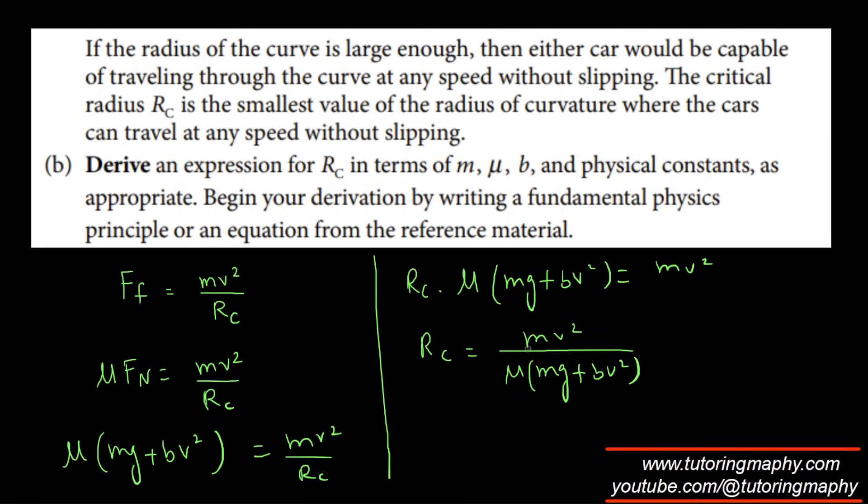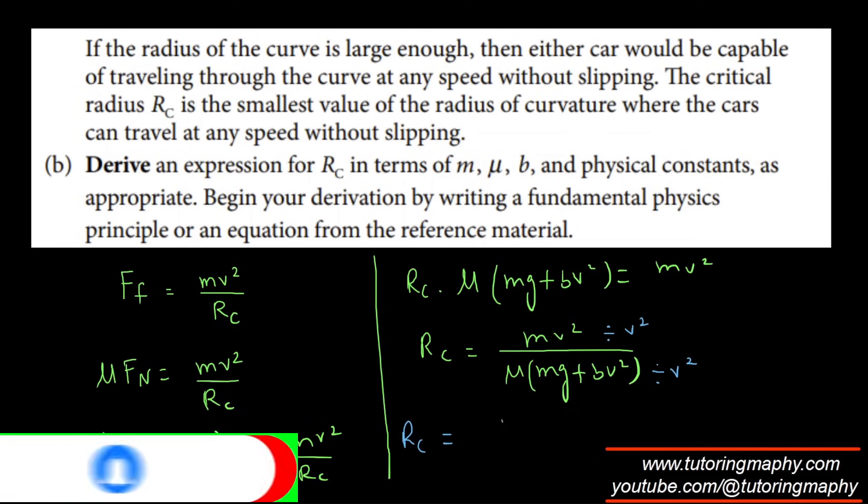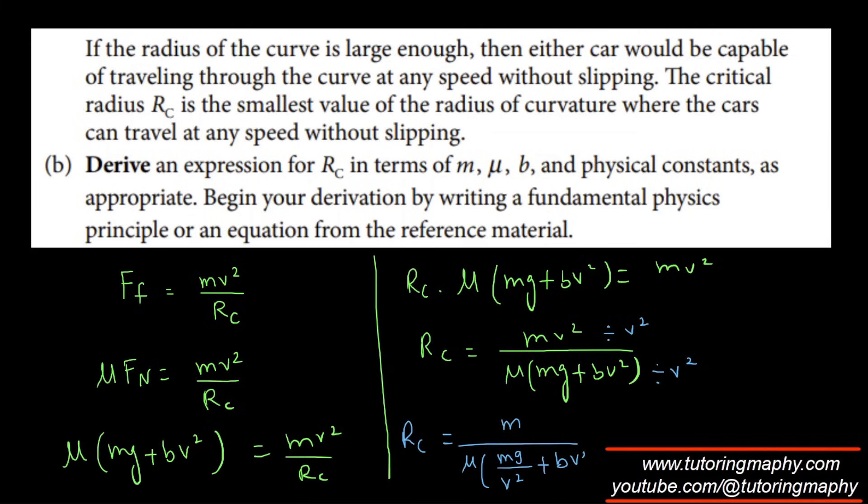So that's what I was talking about. You can get this much, but then you will wonder that they don't need V. They just need in terms of μ and B. So the catch over here is I'm going to rearrange. I'm going to manipulate this equation as R_C is equal, I'm going to divide both sides with V^2. So it's going to look like, I'm dividing this by V^2 and I'm dividing this with V^2. So MV^2 divided by V^2 is just M. And here, this V^2 will look like MG over V^2 plus B, because it will become BV^2 over V^2 and V^2 and V^2 is gone. So it's just B.